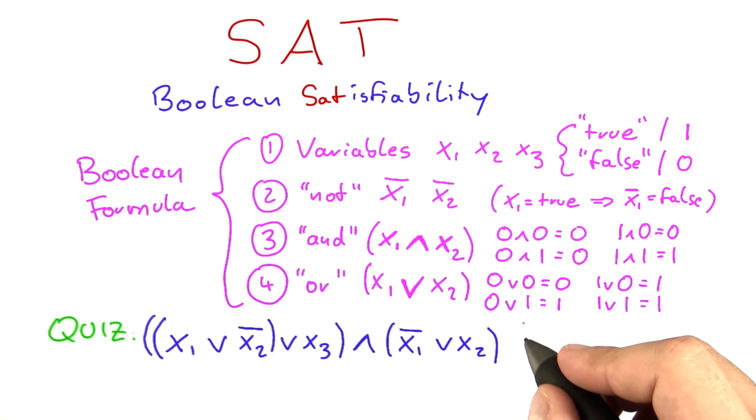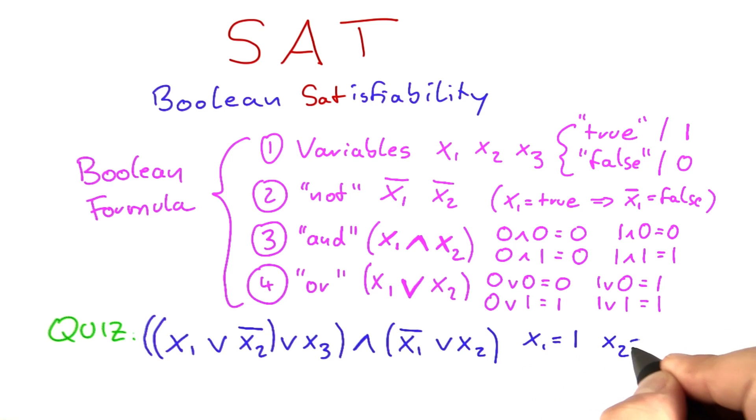We're going to have that x1 is equal to true or 1, x2 is equal to true, and x3 is also set to true or 1.